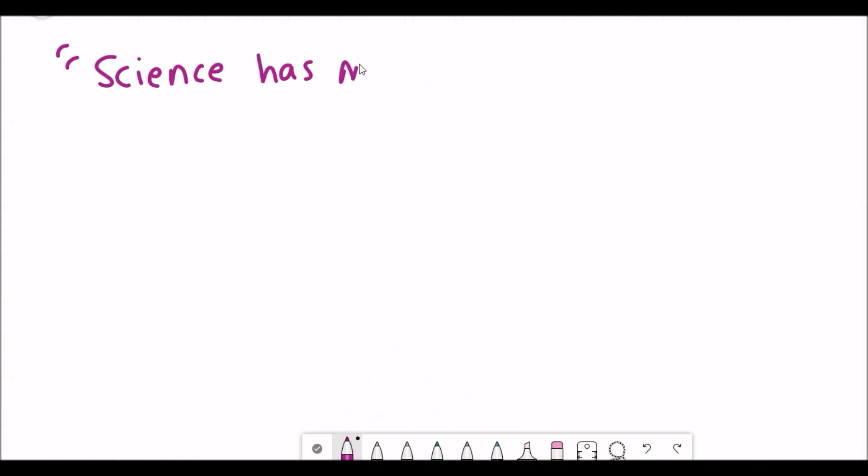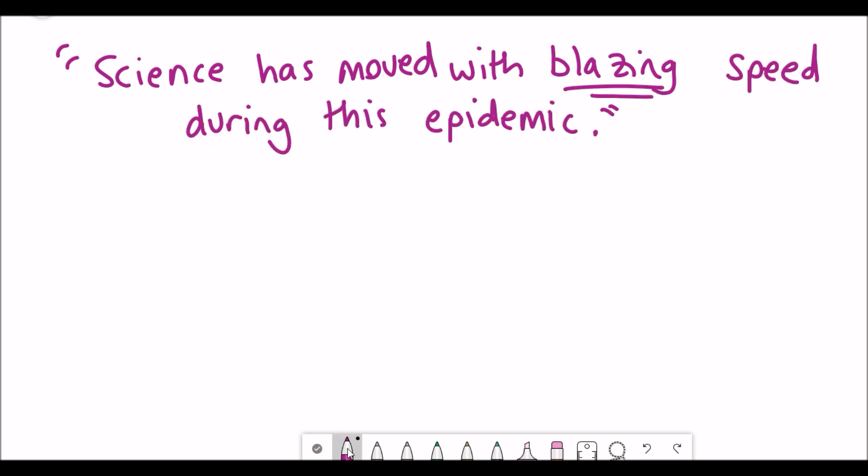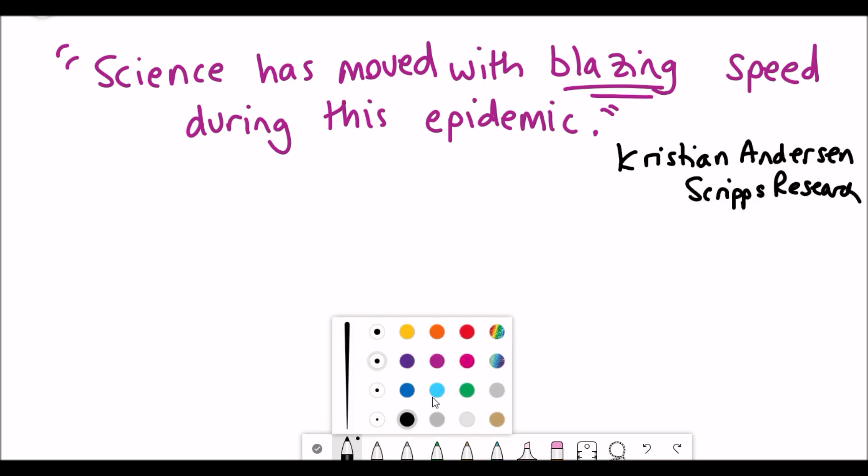But, you know, can we still find a cure? Well, other information that has been really useful as well has been genomic information of the sequencing information of the coronavirus. And to quote Christian Anderson, science has moved with blazing speeds during this epidemic. And it really has.